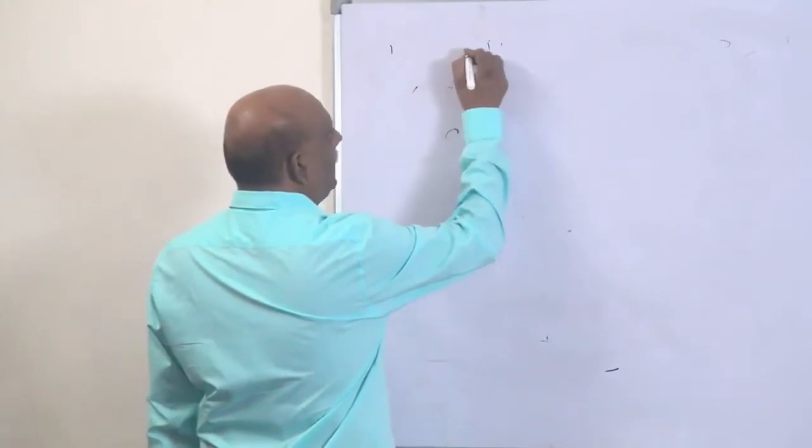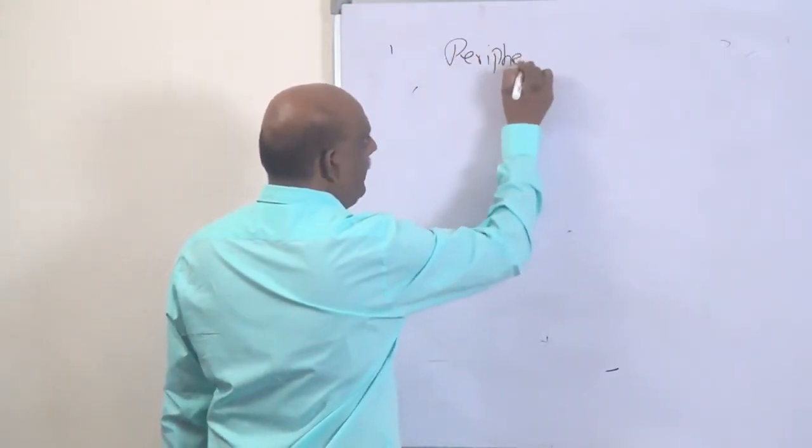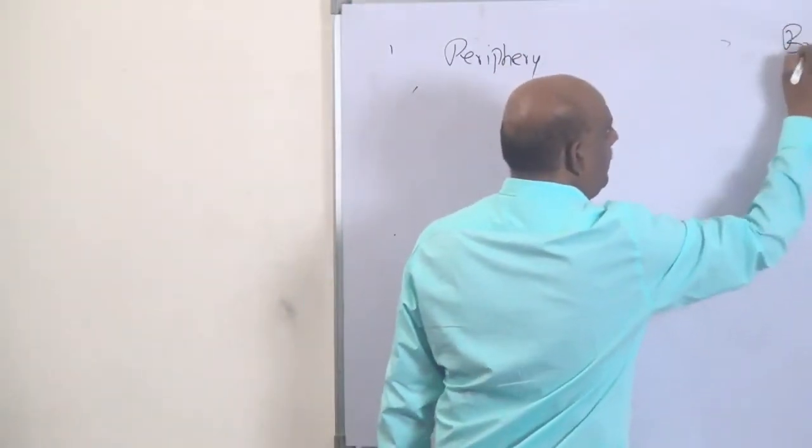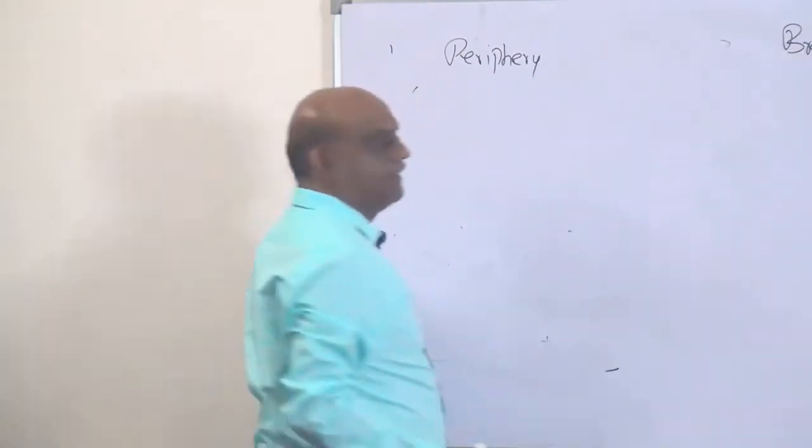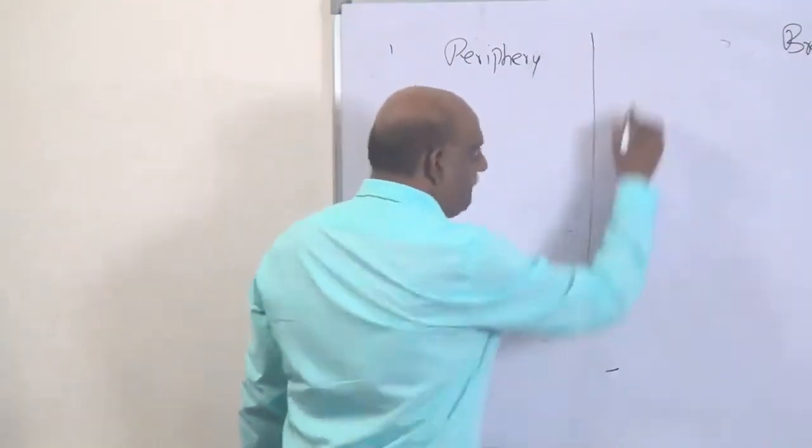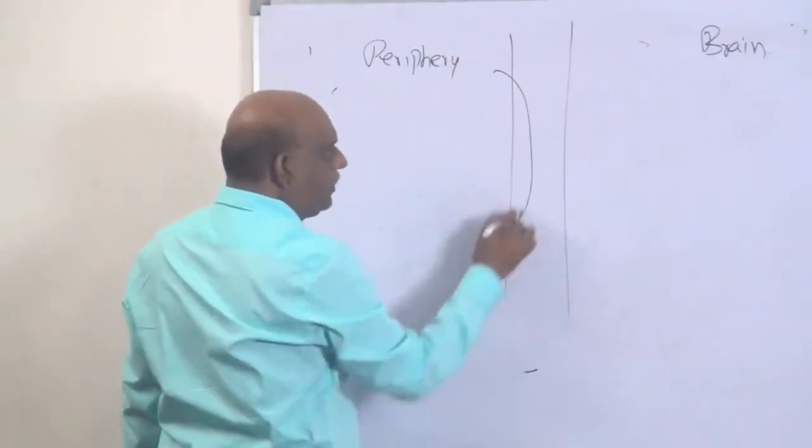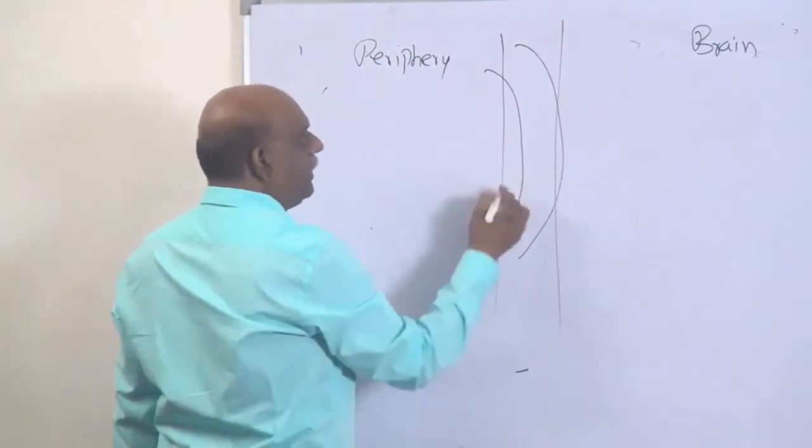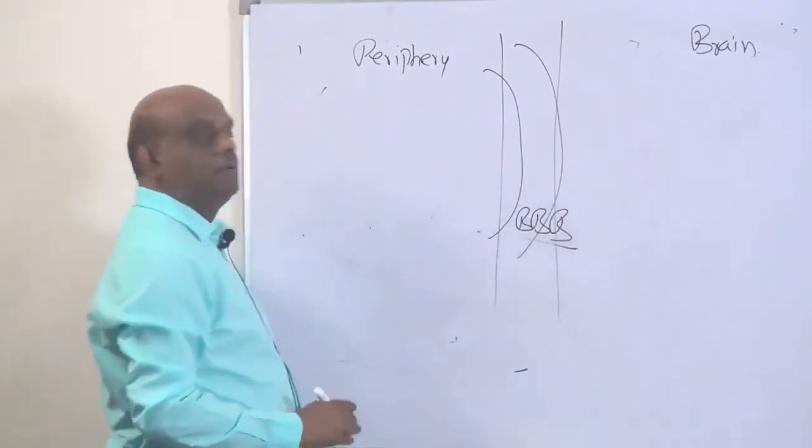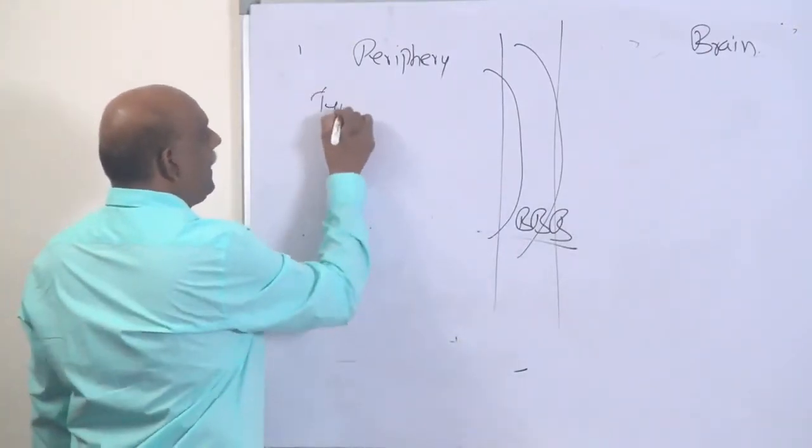So doctor, there is the periphery, and the other is the brain. Between these two flows a river, the cerebrospinal fluid, and there is a bridge on them called BBB, the blood-brain barrier. So the whole story starts from where? Tyrosine is the one from where the story starts.